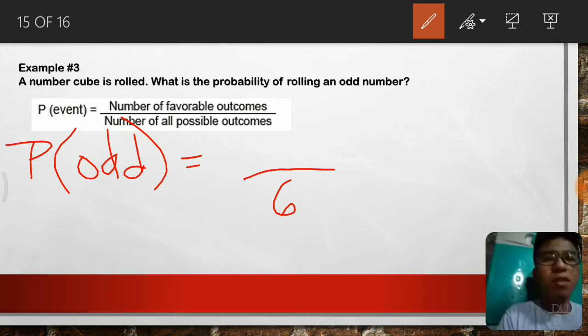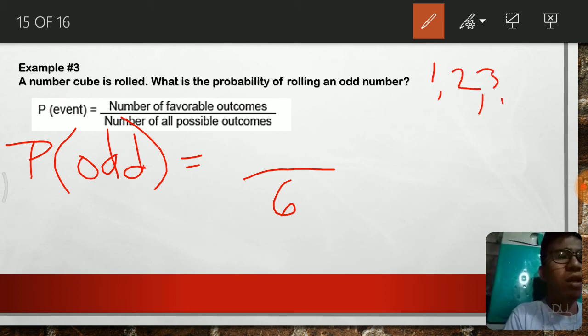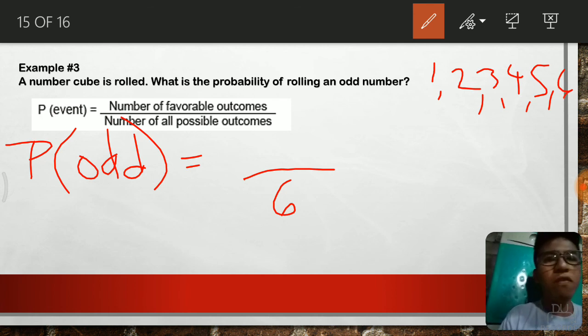How about the number of all favorable outcomes? Let's have a recall first. The numbers are 1, 2, 3, 4, 5, and 6.